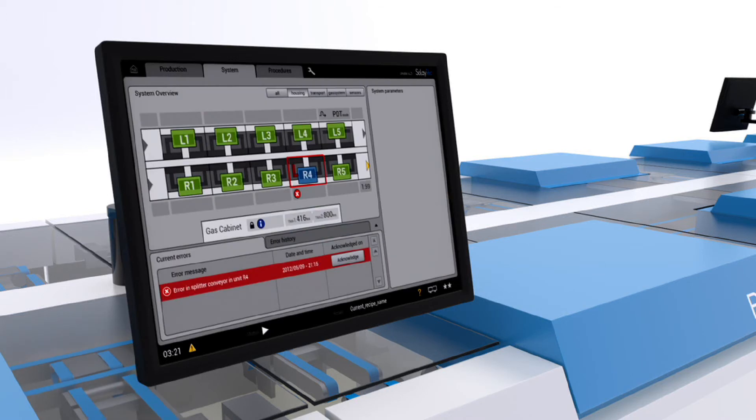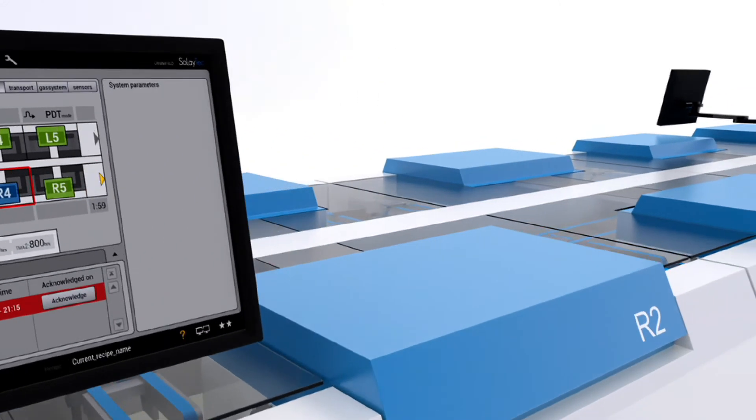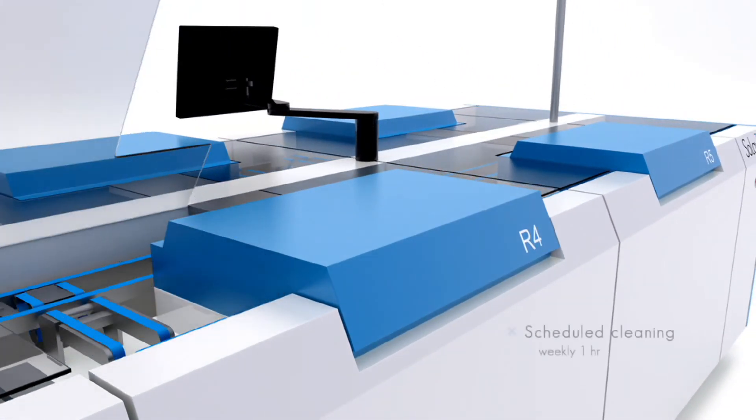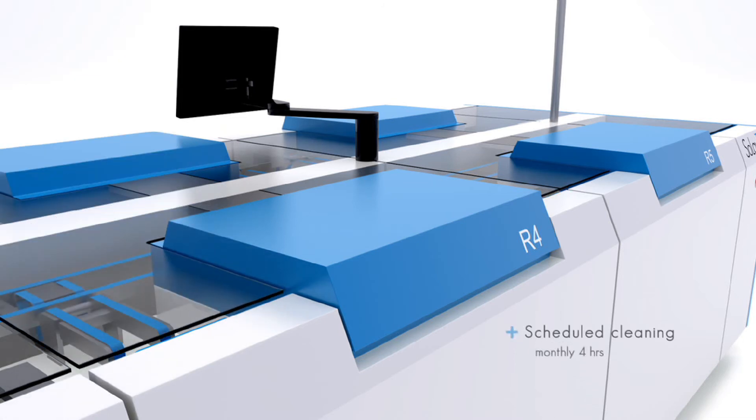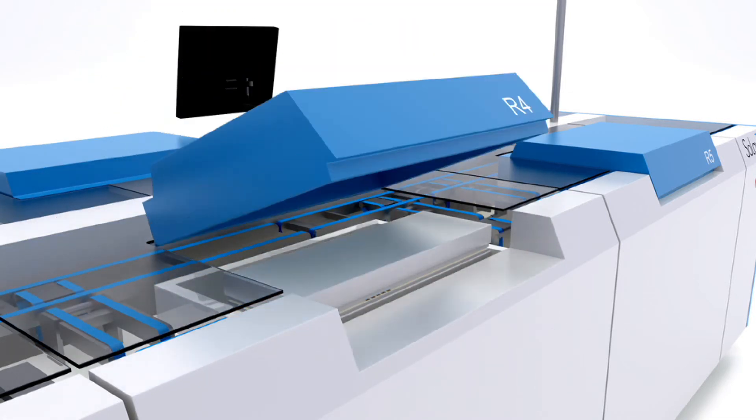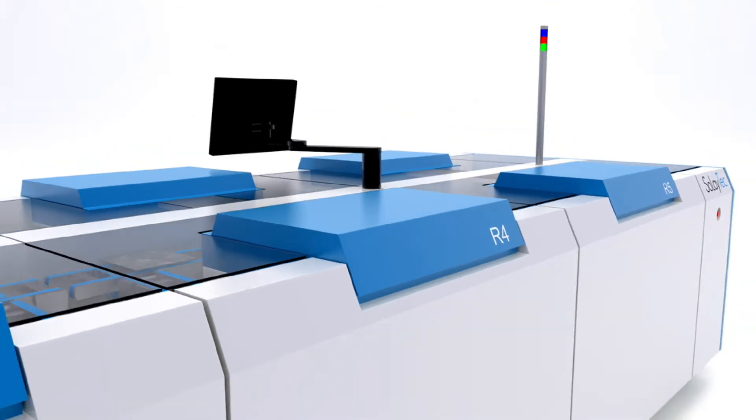If any problems occur in the system, the operator is notified via the user interface. And if one of the deposition units fails or is undergoing scheduled maintenance, the other nine deposition units continue production.